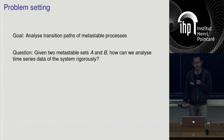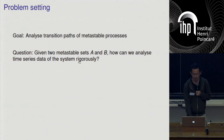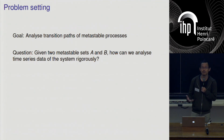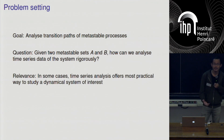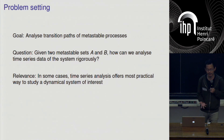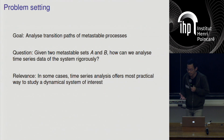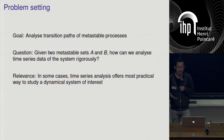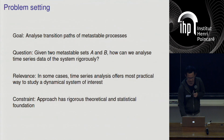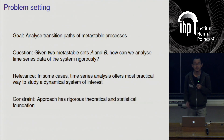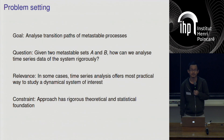The problem I want to ask is: we want to analyze transition paths of metastable diffusion processes in a structured way. The question is, if I give you two metastable sets A and B, how do I analyze the time series data of such transition paths in a rigorous and principled way? The relevance is that time series analysis offers pretty much the most practical way to study a dynamical system of interest — for example, if the system is too complex to study analytically but you can simulate it easily. The constraint we place on ourselves is that we want our approach to have a rigorous theoretical and statistical foundation.